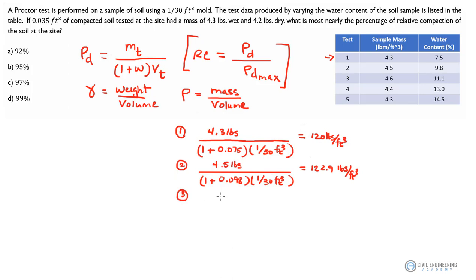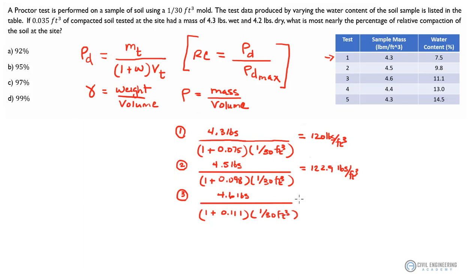Let's run calculations for test three. On this one we were at 4.6 pounds, and we're going to divide all of that by 1 plus the water content, which on this one was 0.111, and again times 1/30th cubic feet. If we do that for test three, we should come up with 124.2 pounds per cubic foot.